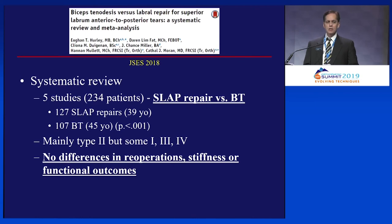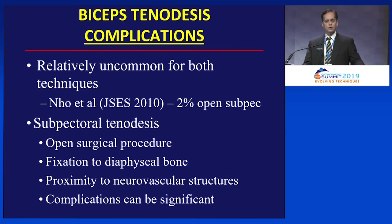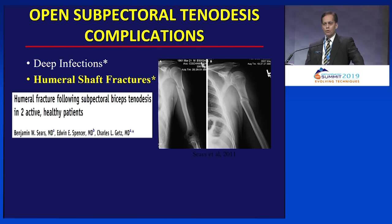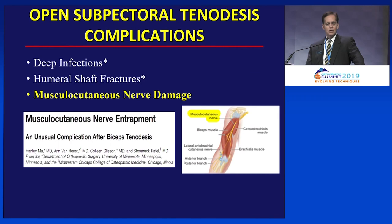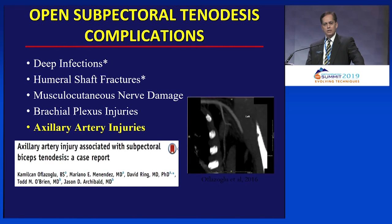We know that biceps tenodesis has its own set of unique complications, especially open sub-pectoral tenodesis. While the overall complication rate is low, the complications you can get are doozies. Deep infections have been described with open sub-pec tenodesis — it's happened to me. Humeral shaft fractures have occurred with sub-pectoral biceps tenodesis — it's happened to me. Musculocutaneous nerve damage, brachial plexus injuries, and even axillary artery injuries have been reported.